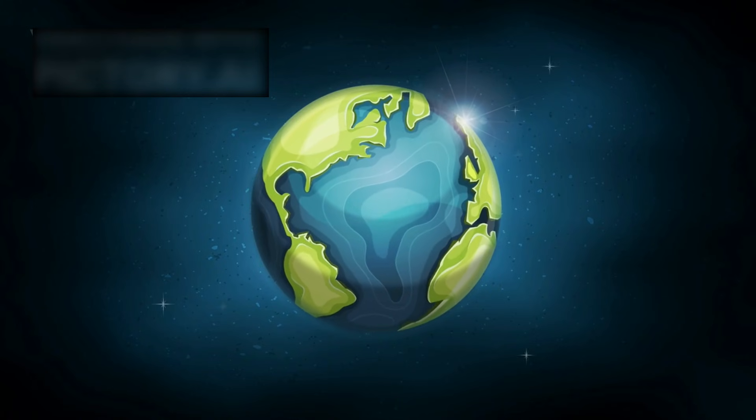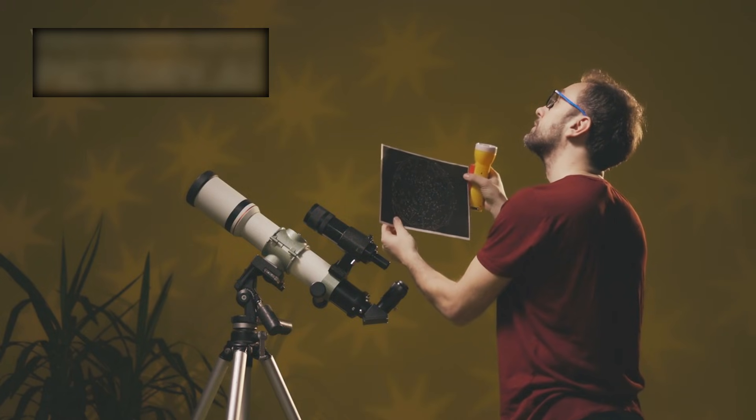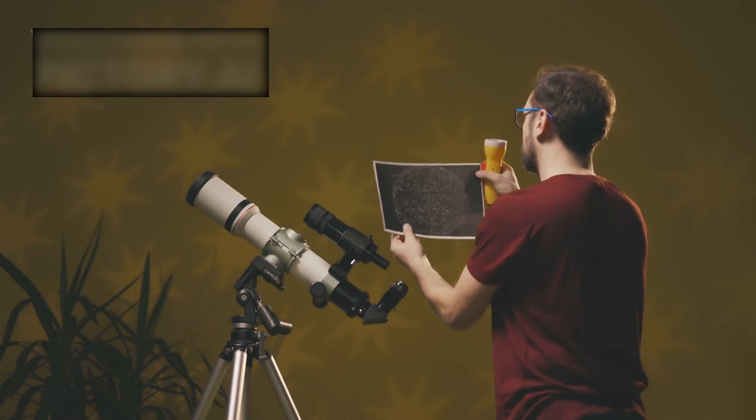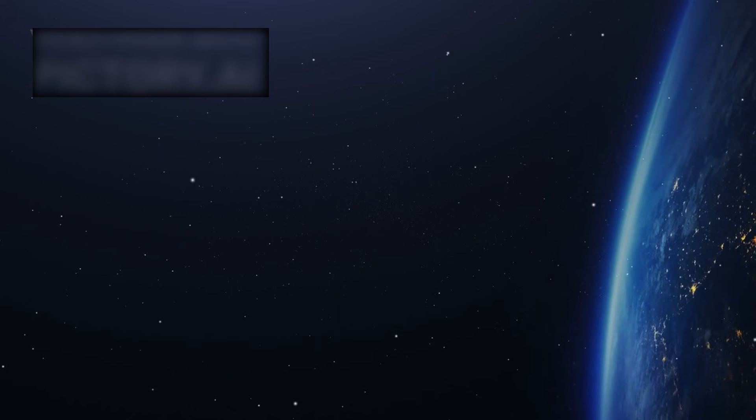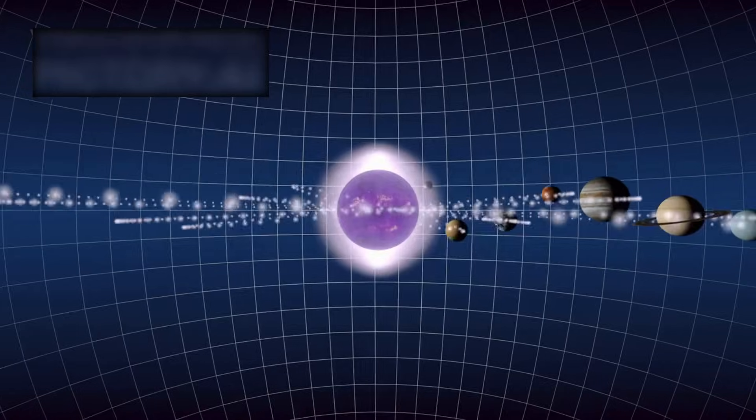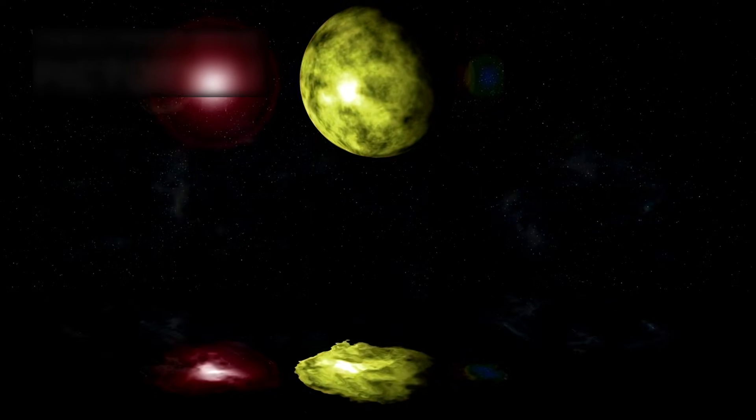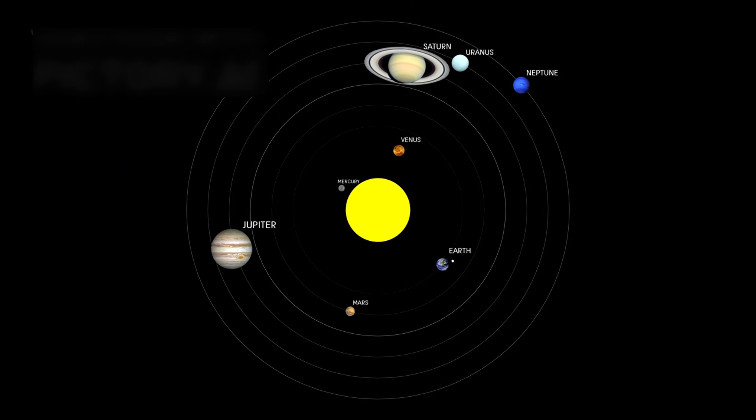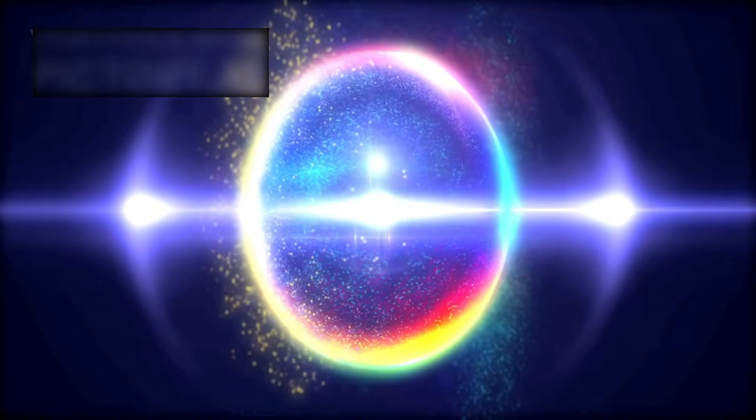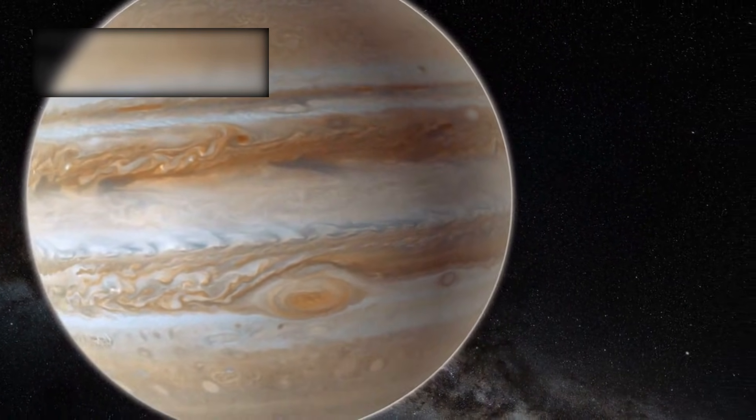What exactly is a Hycean planet? In 2021, astrophysicist Nikku Madhusudhan introduced a revolutionary idea: worlds dominated by vast oceans and shrouded beneath thick hydrogen-rich atmospheres. He called them Hycean planets, a name blending hydrogen and ocean. These planets are not like anything in our solar system. They can be up to 10 times the mass of Earth and twice its radius. Yet they are not massive balls of gas like Jupiter or Saturn.